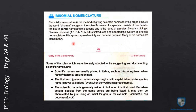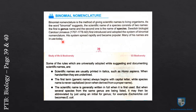Swedish biologist Carolus Linnaeus first introduced and adopted the system of Binomial Nomenclature. His system spread rapidly and became popular, and many of his names are still in use today.